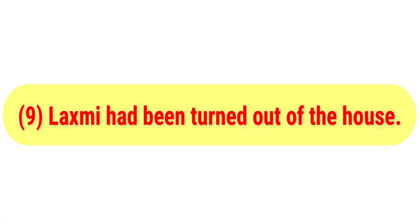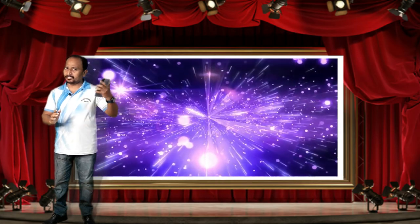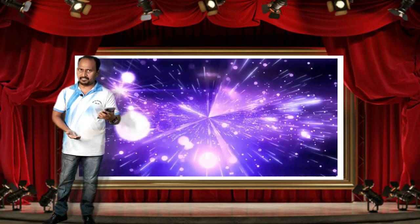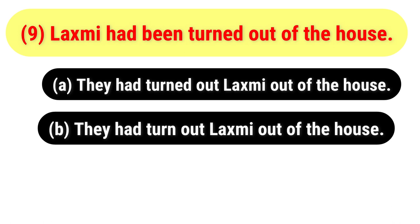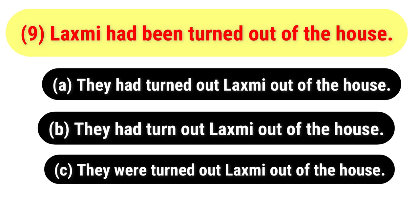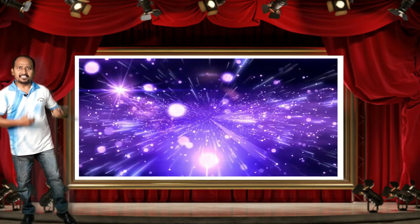Question nine: 'Lakshmi had been turned out of the house.' This sentence is in passive voice — you have to change it to active voice. The options are: A) They had turned out Lakshmi out of the house; B) They had turned out Lakshmi out of the house; C) They were turned out Lakshmi out of the house; D) They had been turned out Lakshmi out of the house. Your time begins now.